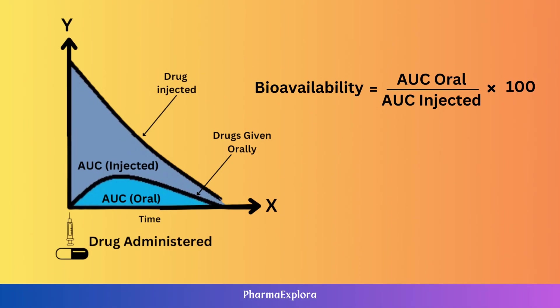To better understand this, we create a graph where the y-axis represents the drug's plasma concentration and the x-axis represents time. This graph helps us see how the drug's levels change in your blood over time. The area under the curve on this graph shows the total amount of the drug your body gets, and it helps us compare how different medicines are absorbed. So, when we talk about the bioavailability of an orally administered drug, we're talking about the ratio of the AUC when you take it by mouth compared to the AUC with an IV injection — it helps us understand how well your body absorbs medication.